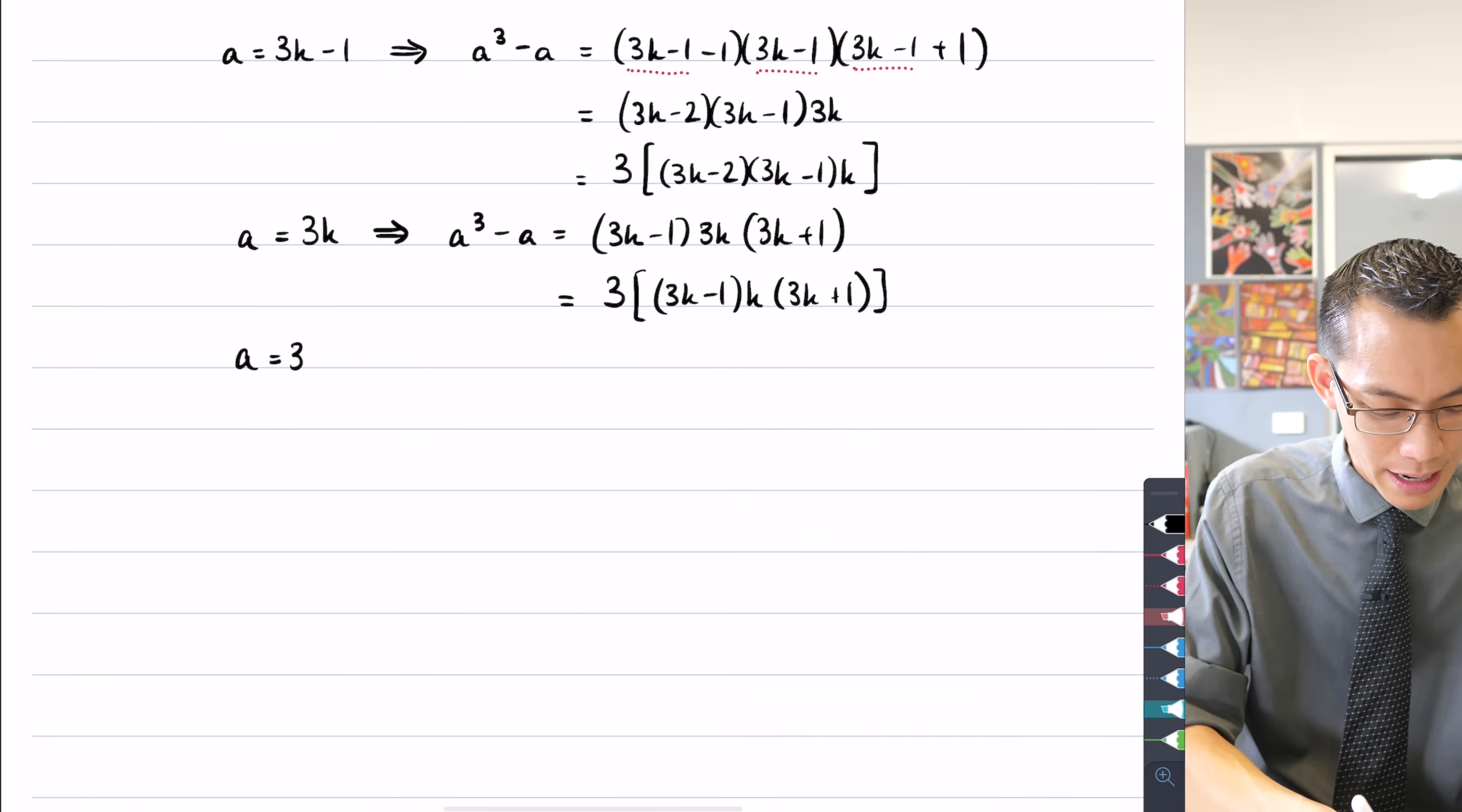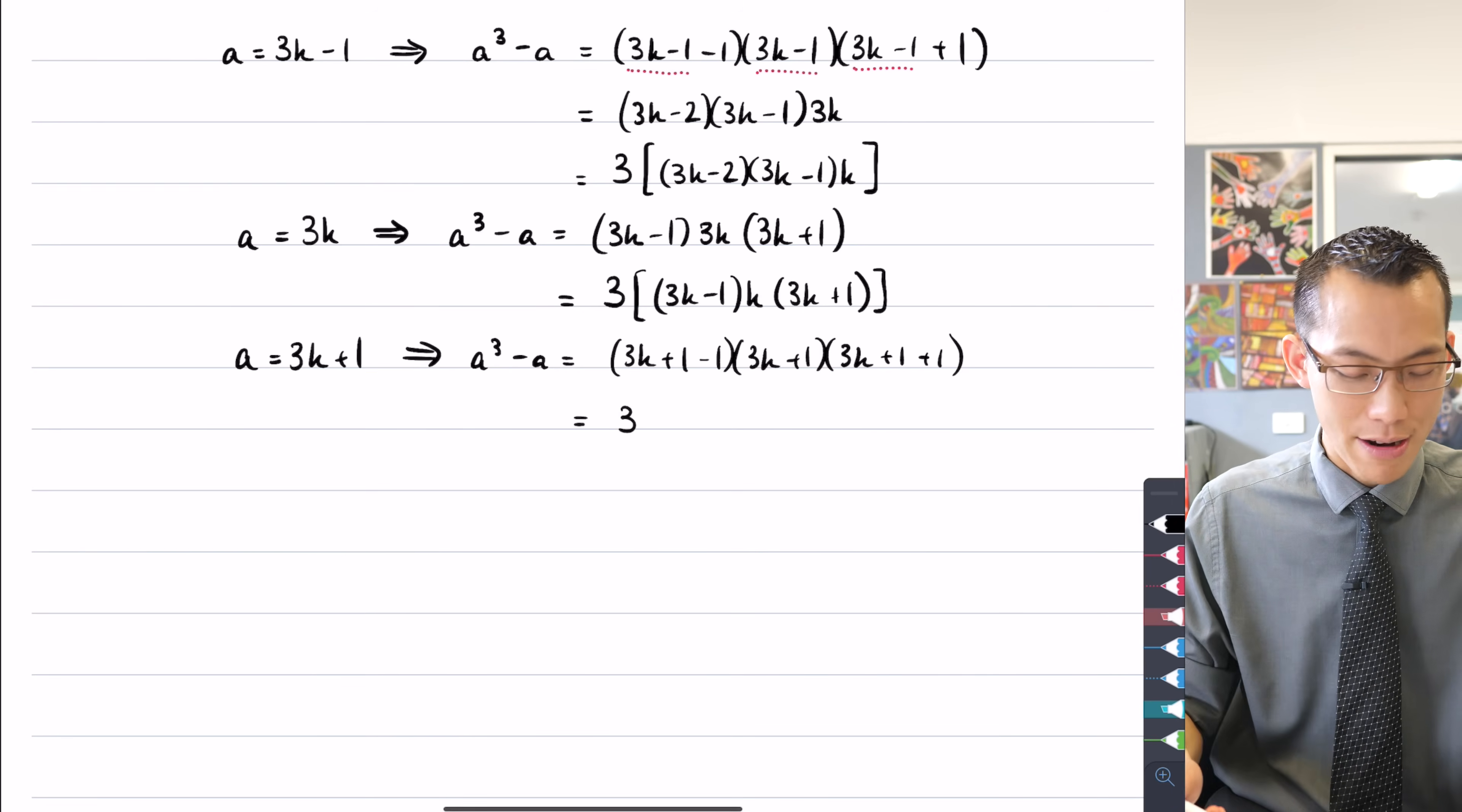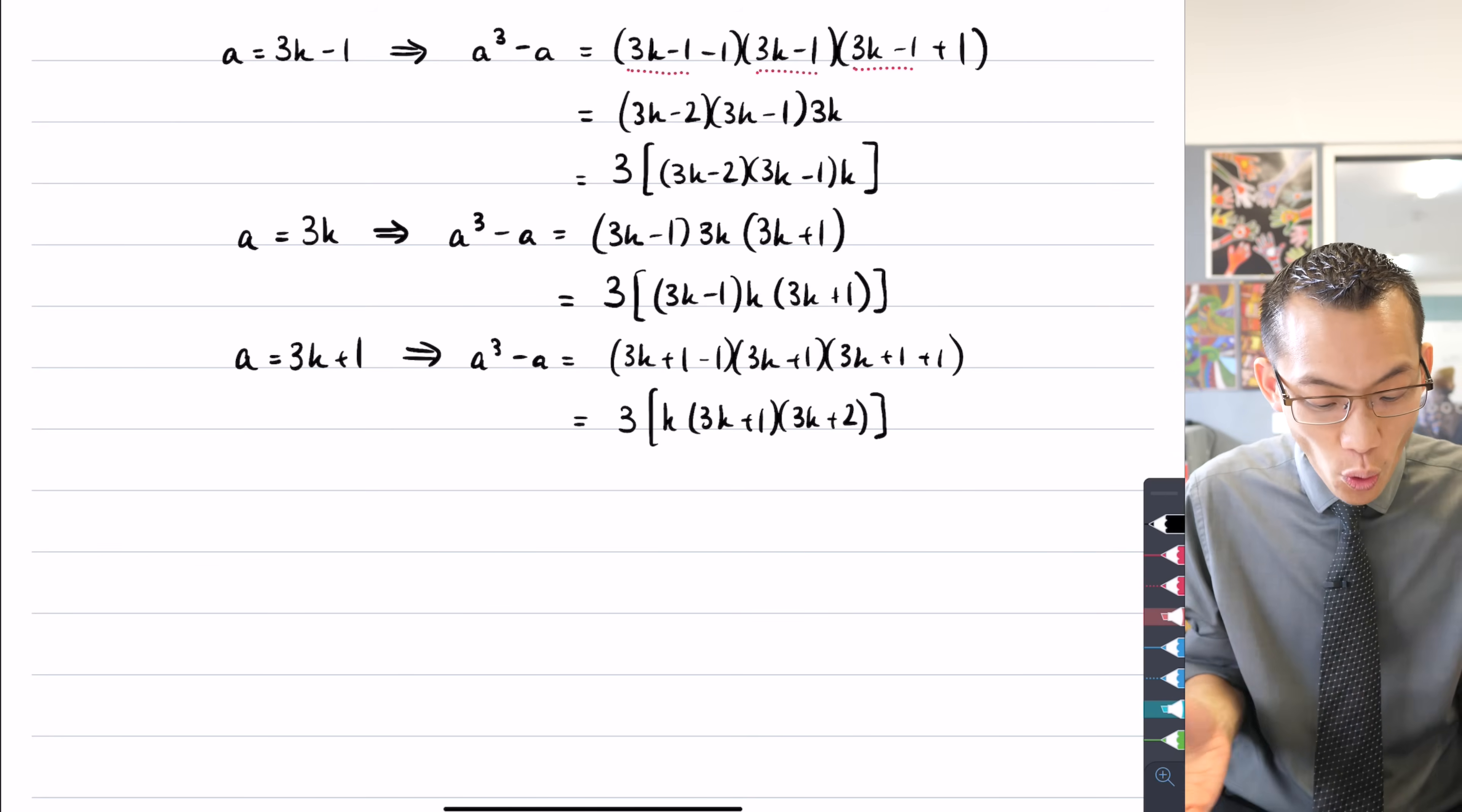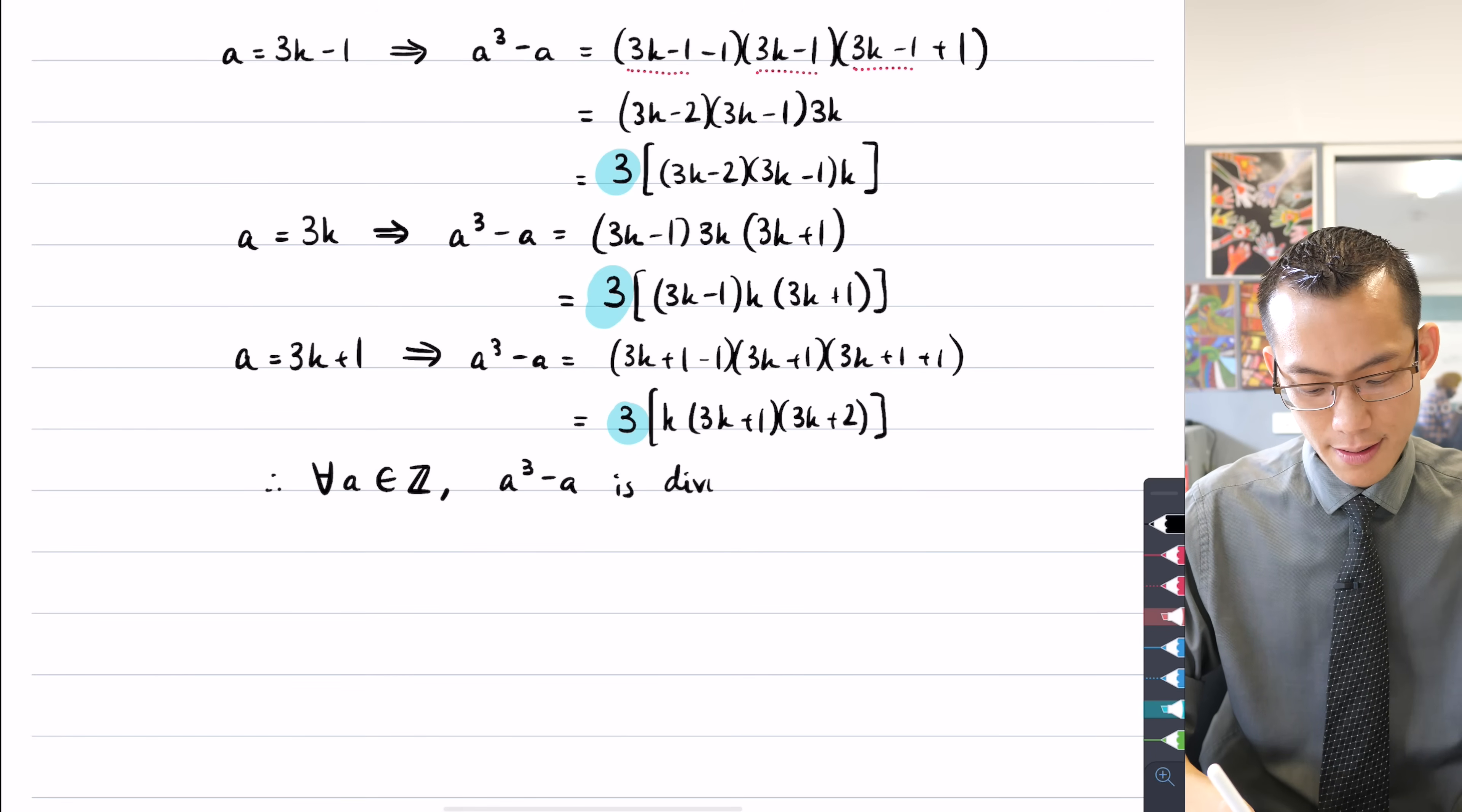And by now you're like, I can do this on autopilot. My final case is the 3k + 1 case. So I'm going to say for a³ - a, when I do my substitution, it's going to give me, take a breath, (3k+1-1)(3k+1)(3k+1+1). This will tidy up, leaves that three out the front, big brackets. Then there's the k, the plus one and minus one have canceled. And then I get 3k plus one, 3k plus two. So now just like before, I have looked at every possibility for a, and they all end up with a³ - a being divisible by three. You can see it here, here, and here. So like before, I can say, therefore, for all the values of a that are integers, a³ - a is divisible by three.